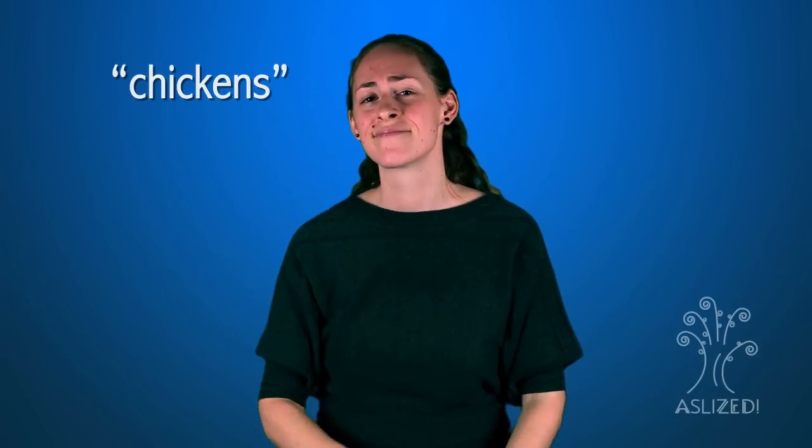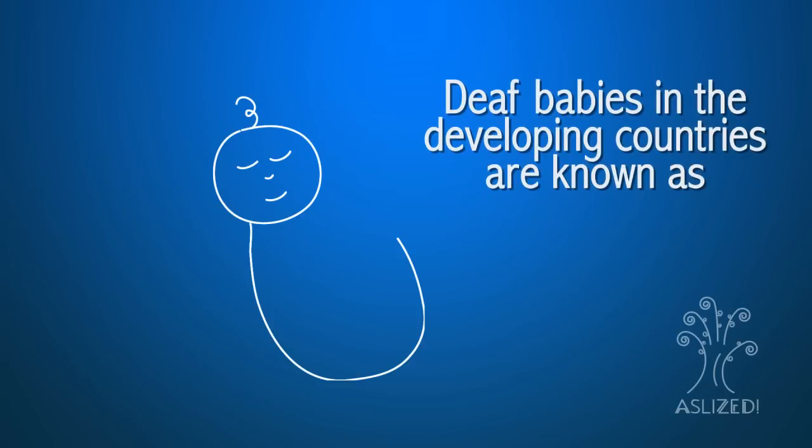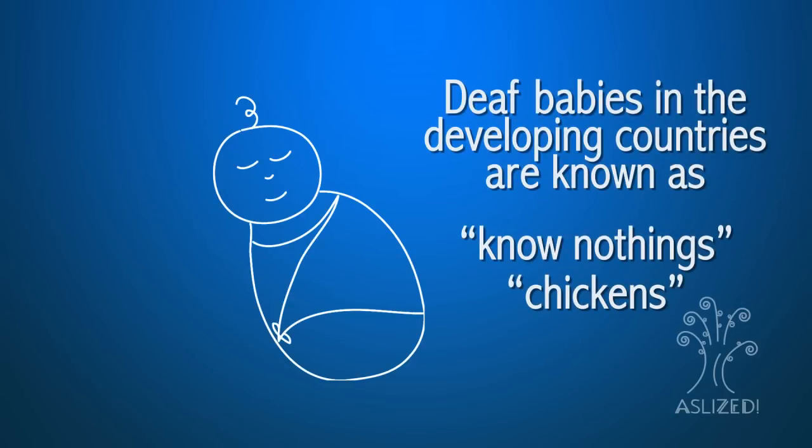When these types of deaf children finally enter a deaf school, they are in a category called, quote, know-nothings. Additionally, people that gesture and communicate without language or schooling are called chickens.